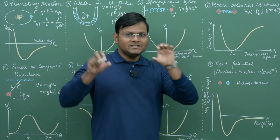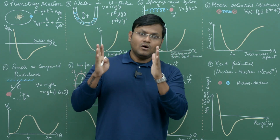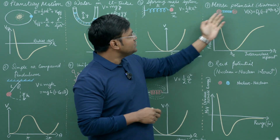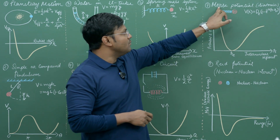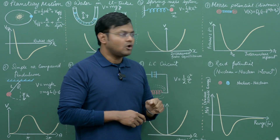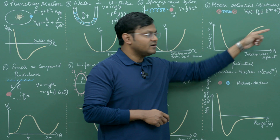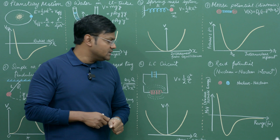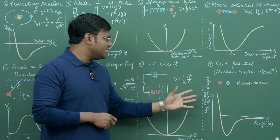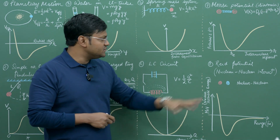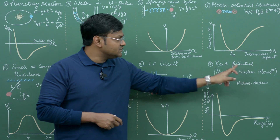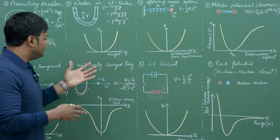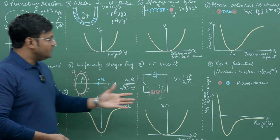If we have two atoms bound together by a bond, the bond length is not really fixed. The potential energy associated with this bond is given by what is known as the Morse potential for a diatomic molecule, which has a certain graphical representation. Another example is two nucleons interacting with each other, where the nuclear interaction energy is given by an approximation called the Reid potential, which looks something like this.